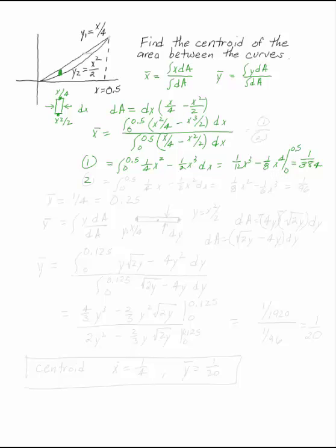The denominator is the integral from 0 to 0.5 of (1/4)x minus (1/2)x², which is (1/8)x² minus (1/6)x³, giving 1/96. Dividing the numerator by the denominator, x̄ is 1/4 or 0.25.